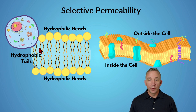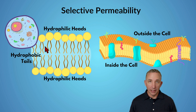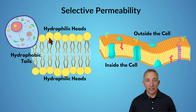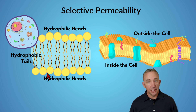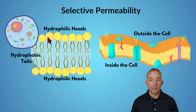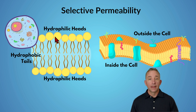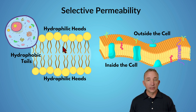We call this a phospholipid bilayer. When we refer to this, it's two sides — the heads and tails — and then it mirrors itself on the other side, so two layers — that's what we call a bilayer. It's called phospholipid, referring to the phosphates of the heads and the lipids within the tail. So a phospholipid bilayer.